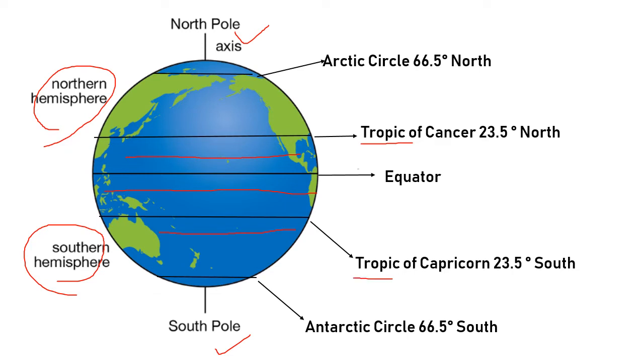The Tropic of Capricorn is the parallel of latitude that is approximately 23.5 degrees south of the equator, and that is the most southern latitude on earth where the Sun can appear directly overhead.